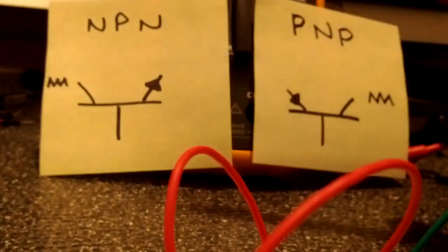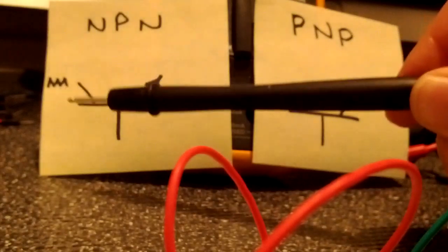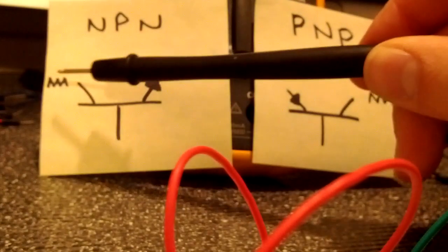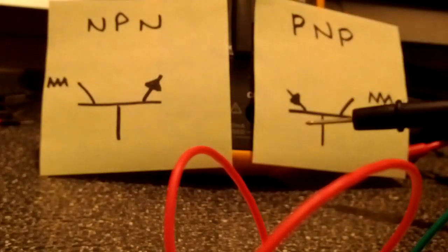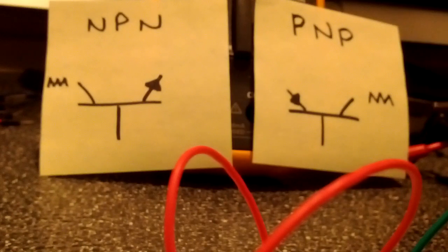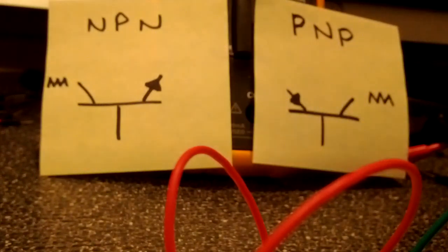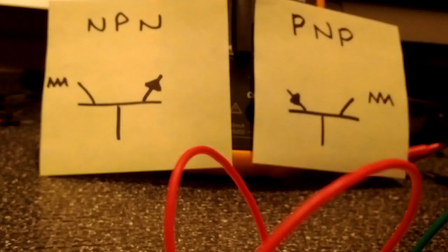The whole principle is the same on both. In both cases you're trying to get current to flow through your load from power to ground, and as with any transistor you're trying to get this large load current to flow using a very small signal current. They're amplifiers, they're switches in a lot of ways.